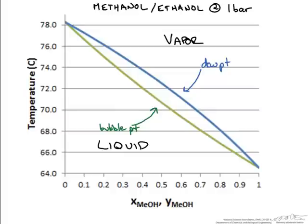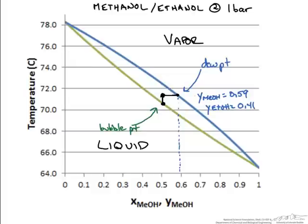Let's pick an arbitrary point — say a 1-to-1 molar ratio of methanol to ethanol, right around 70–71°C. If we increase the temperature slightly while still maintaining two phases, we go to the dew point line, which gives us the vapor mole fraction of methanol — say 0.59. That means the vapor mole fraction of ethanol is 1 minus 0.59, or 0.41. Going to the bubble point line gives the liquid mole fraction of methanol, approximately 0.45, and ethanol 0.55.